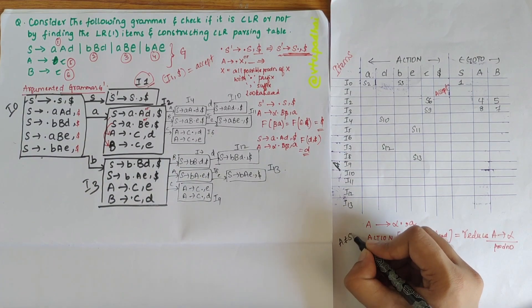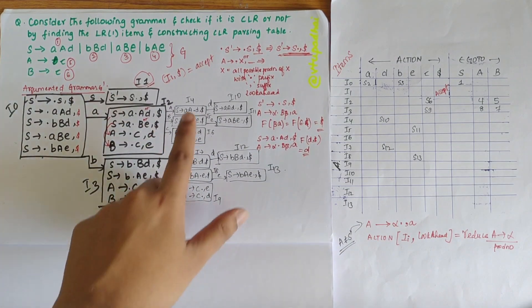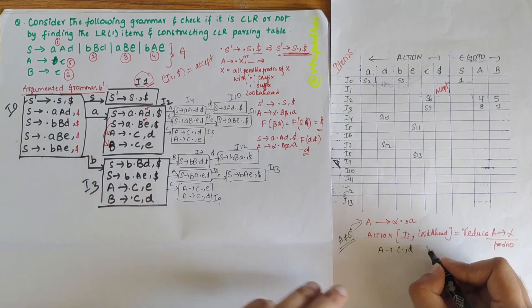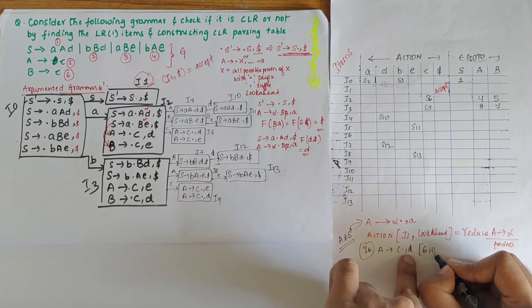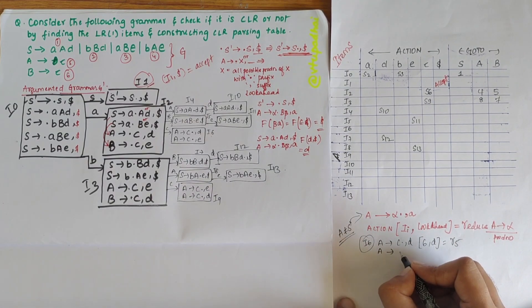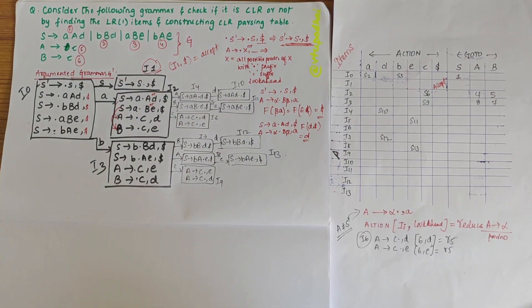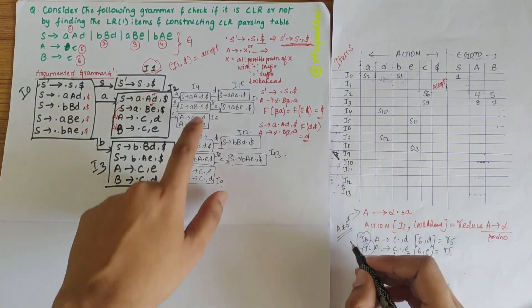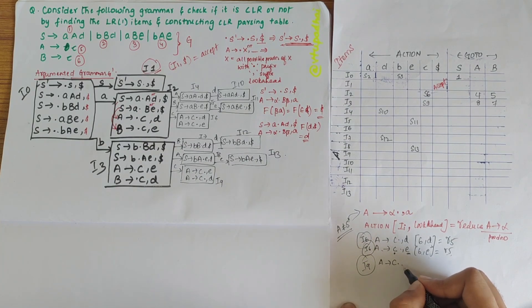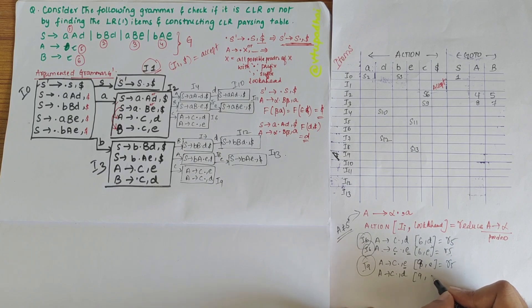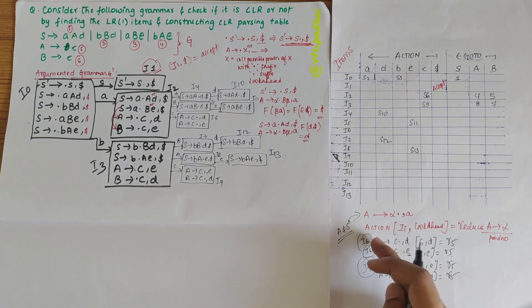For I6, which has A → c•, d and A → c•, e: writing for cell (6, d) — A → c is the fifth production, so I write R5. For cell (6, e) I also write R5. For I9, which has A → c•, e and A → c•, d: cell (9, e) = R5 and cell (9, d) = R5. A → c is the fifth production in all cases.